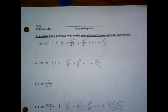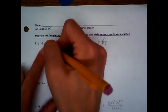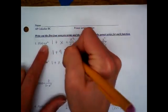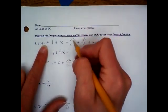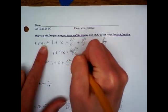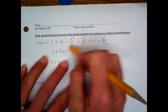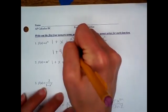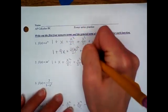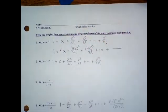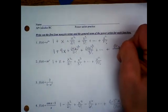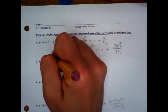For this one, everywhere there's an X, we're going to plug in four. So it'll be one plus four X, plus four X squared over two factorial, plus four X cubed over three factorial. Let's leave it completely unsimplified because the less simplified it is, the easier it is to write the general term. For the general term, it's four X to the N over N factorial — you're literally just plugging that in.